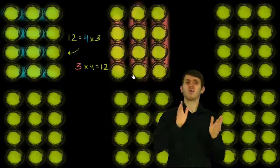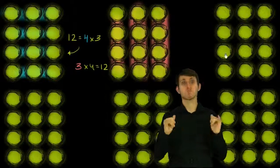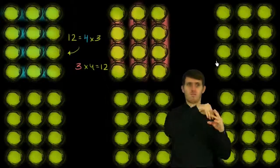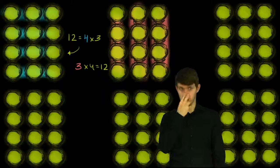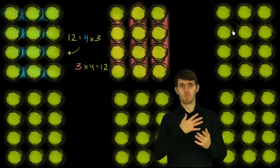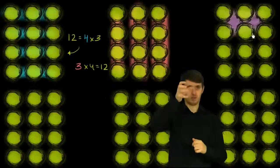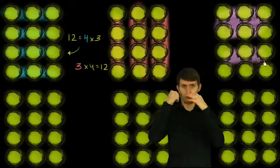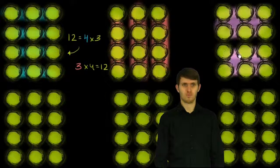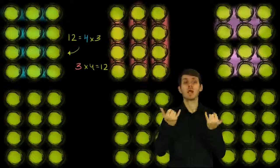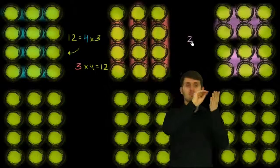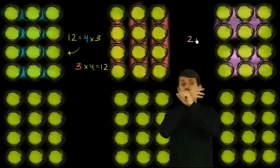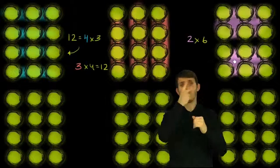But we don't have to stop there. We could also view 12 as 2 groups of 6. This is 1 group of 6 right over here, that's another group of 6. So we could view this as 2 times 6. 2 times 6 will also get us to 12.